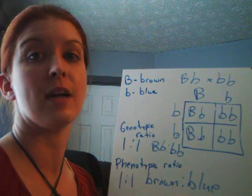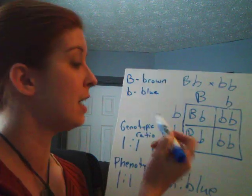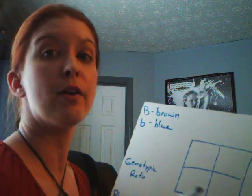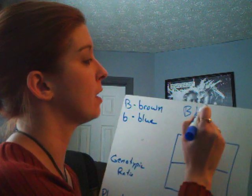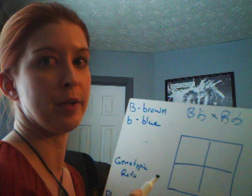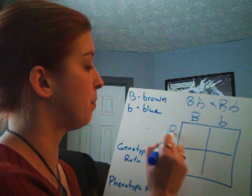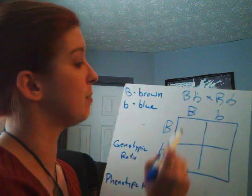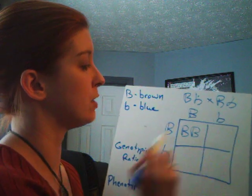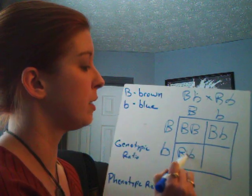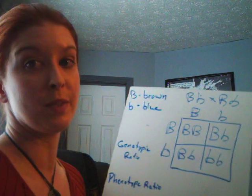Hopefully that makes sense. We're going to do one last cross to show that genotypic ratios and phenotypic ratios can be different from each other. Now we're going to take two heterozygous individuals and cross them — remember, hetero means different — so big B little b times big B little b. We put one parent across the top and the other along the side, then cross them out: big B big B goes in the first box. Always keep the dominant allele first in your Punnett square. Then big B little b, and last but not least little b little b.